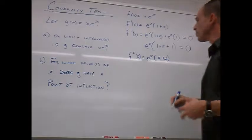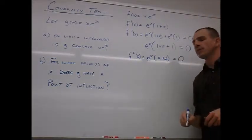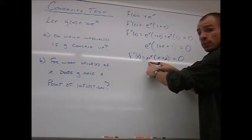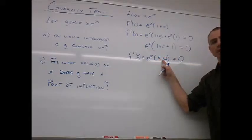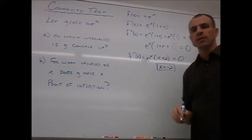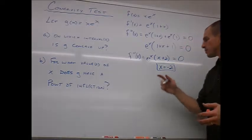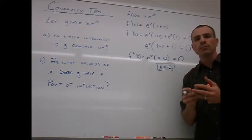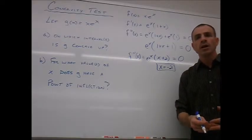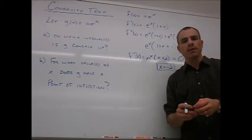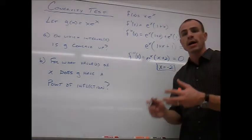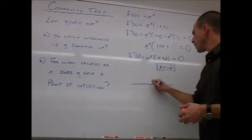Setting e^x(x + 2) = 0: e^x is never zero, so x + 2 = 0 gives x = −2. This is our possible point of inflection — it's to the second derivative what a critical point is to the first derivative. However, it's not guaranteed to be a point of inflection until we verify that the second derivative actually changes sign at x = −2.